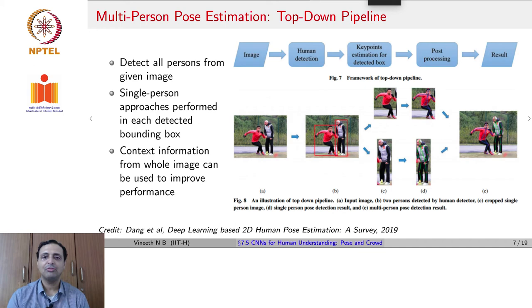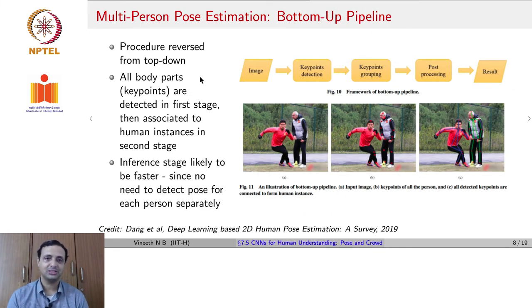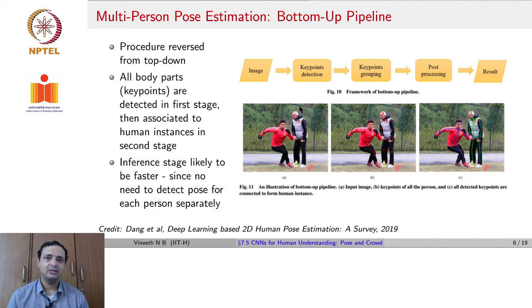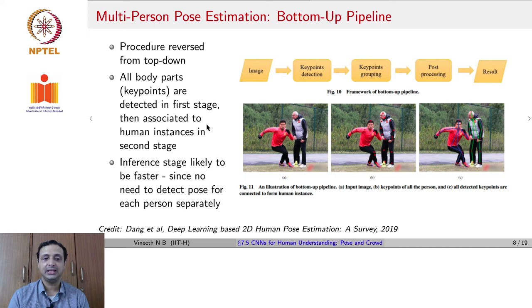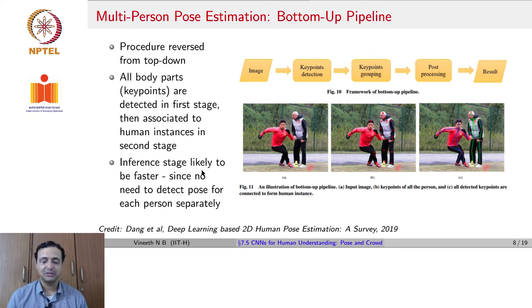In contrast, the bottom-up pipeline reverses the process: all keypoints in the image are detected first, irrespective of which person they belong to — using a detection-based approach producing a full-image heat map. The centers of heat map regions represent different keypoints, and these are then associated to human instances using different methods. Inference is likely much faster in this approach because all people's information is processed simultaneously, rather than running each person's bounding box through separate pipelines.